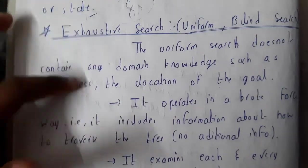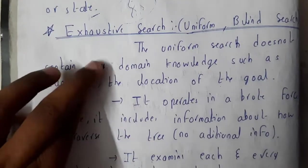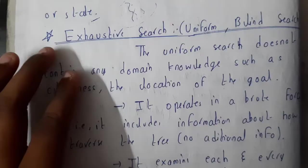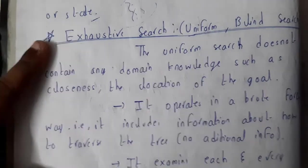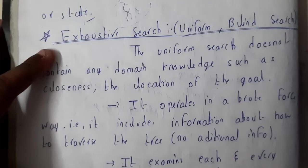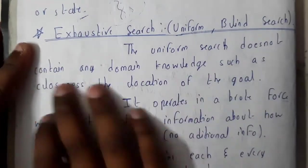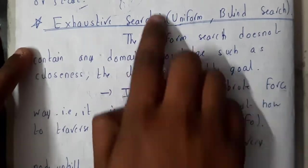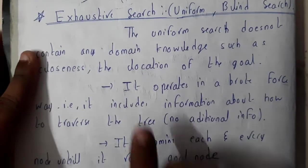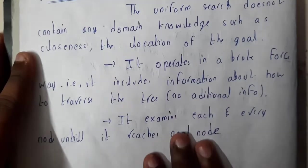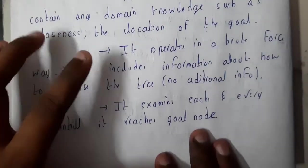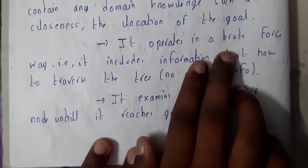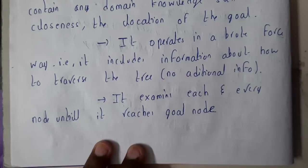If your goal node is here and you are here, there is no idea that the goal node is nearby. If you need to go to another subtree, you will go there instead, and even if the goal is closer, you cannot identify it. That is the reason why these are called exhaustive or blind search. The uniform searching does not contain any domain knowledge, operating level by level or going to depth and coming back in a uniform pattern.